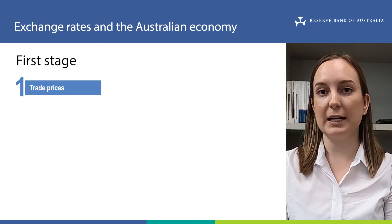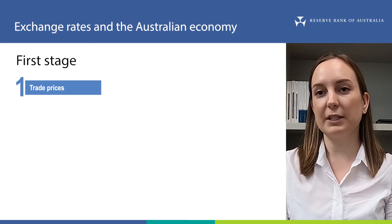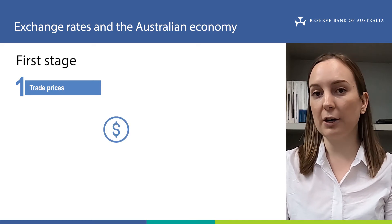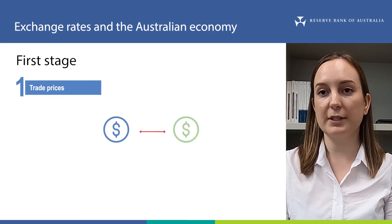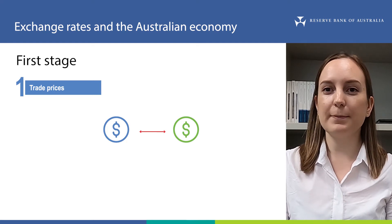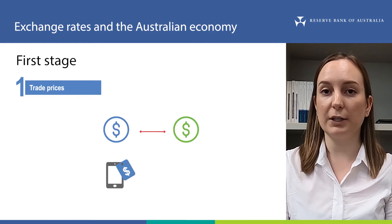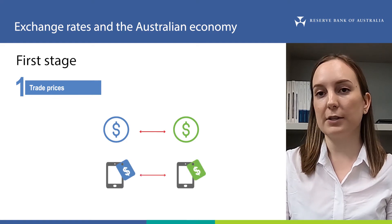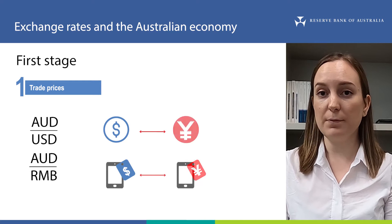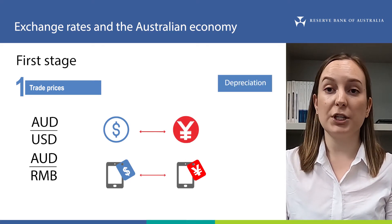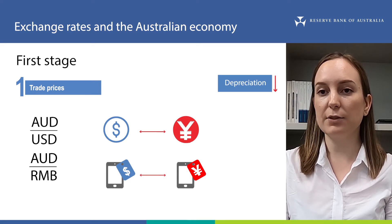Let's talk about the first stage. As we discovered in the previous video, changes in the exchange rate affect how much of one currency is needed to buy goods and services priced in another currency. This means changes in the exchange rate affect the prices of goods and services in Australian dollars relative to another currency, such as the US dollar or the Chinese renminbi. Let's use a depreciation, or decrease in the value of the Australian dollar, to illustrate how changes in the exchange rate can affect prices.